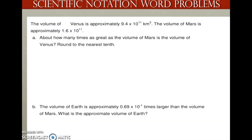Let's take a look at another word problem. The volume of Venus is approximately 9.4 times 10 to the 11th power. The volume of Mars is approximately 1.6 times 10 to the 11th power. Part A says: about how many times as great as the volume of Mars is the volume of Venus? We need to identify the operation using keywords — 'how many times' tells us to divide.